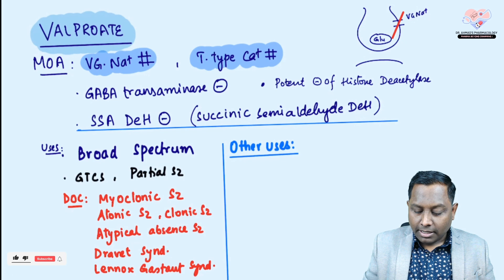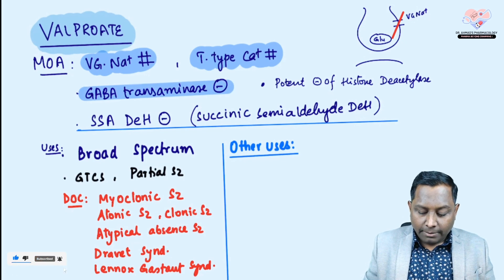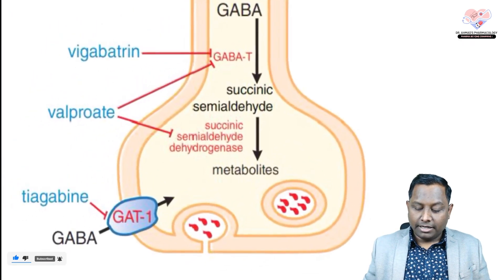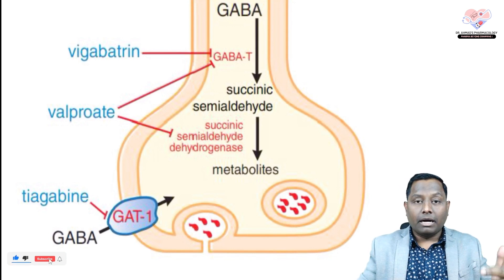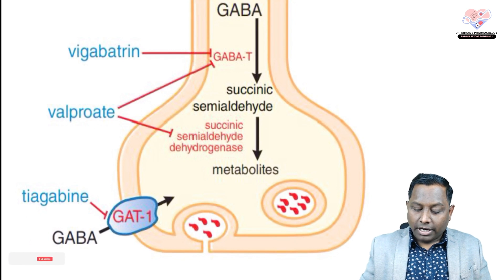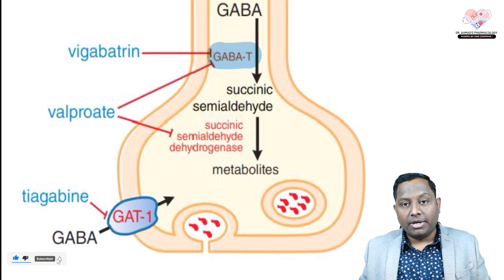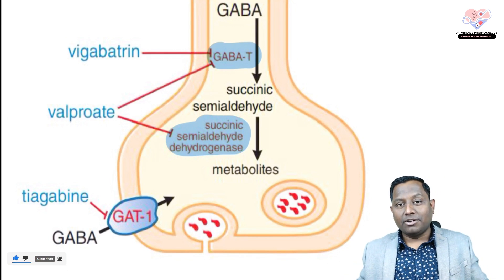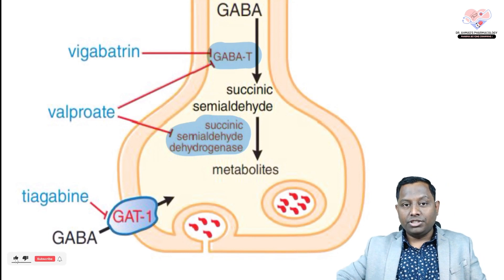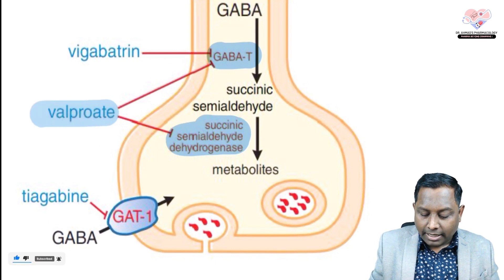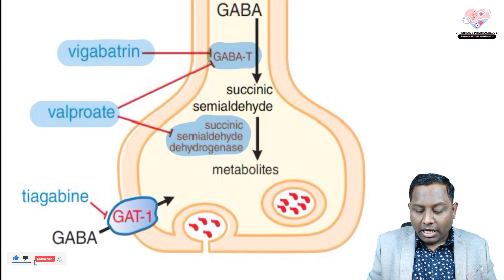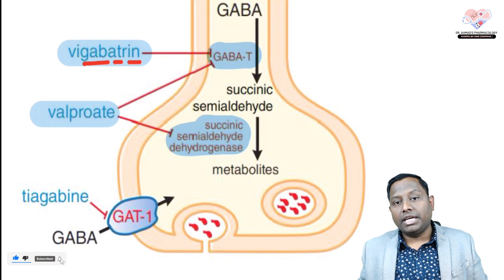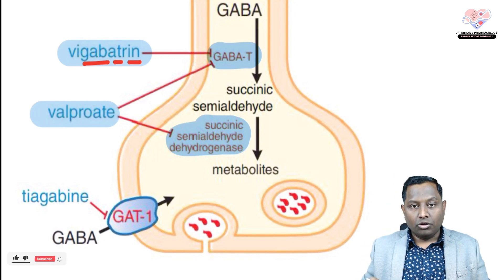Valproate works in multiple ways. It is a GABA transaminase inhibitor and also an inhibitor of succinic semialdehyde dehydrogenase (SSADH). Succinic semialdehyde is an intermediate metabolite of GABA — when GABA is re-taken up into the GABA neuron, it is broken down by GABA transaminase to succinic semialdehyde, and then SSADH causes further metabolism. Valproate inhibits both of these enzymes.